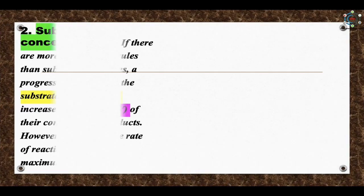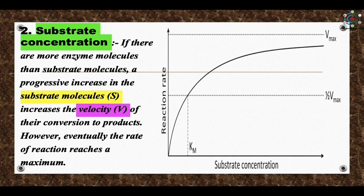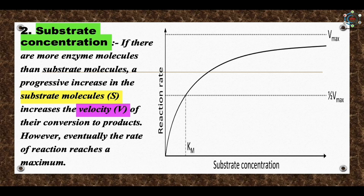Second factor is substrate concentration. If there are more enzyme molecules than substrate molecules, a progressive increase in the substrate molecule increases the velocity of their conversion to products. However, eventually the rate of reaction reaches a maximum. At this stage, the active sites of all available enzyme molecules are occupied by substrate molecules, and therefore the substrate molecules occupy the active sites vacated by the products and cannot increase the rate of reaction further.